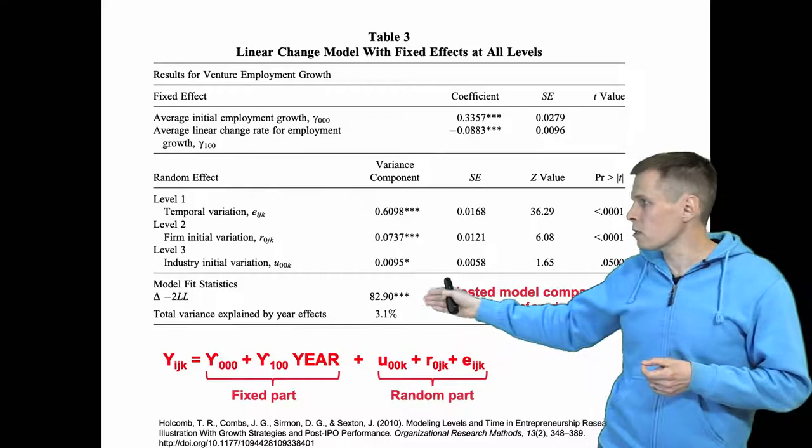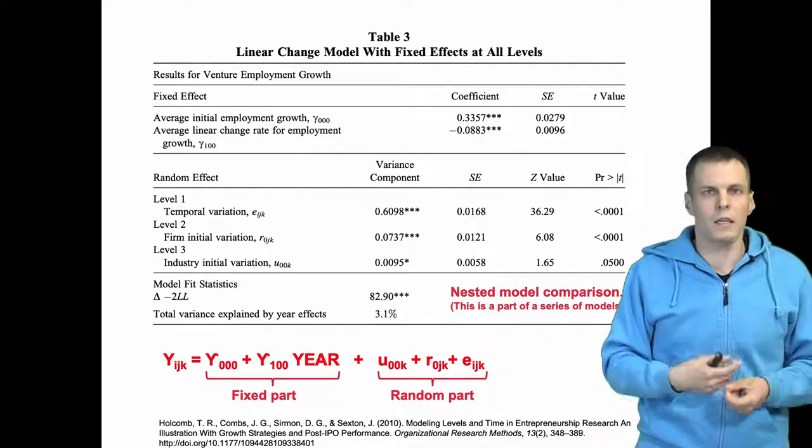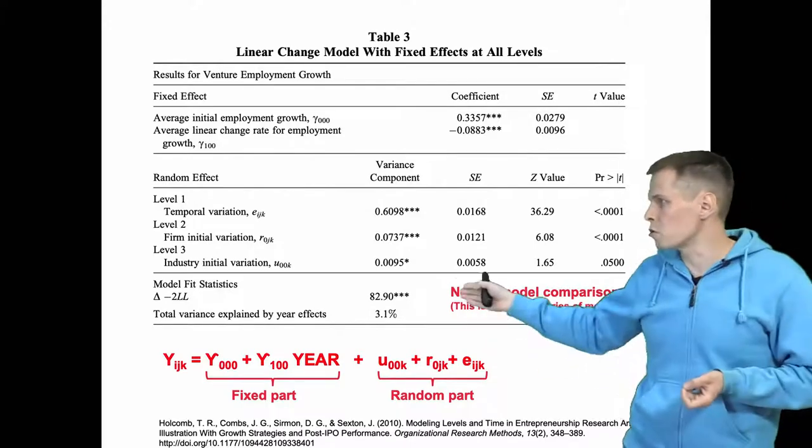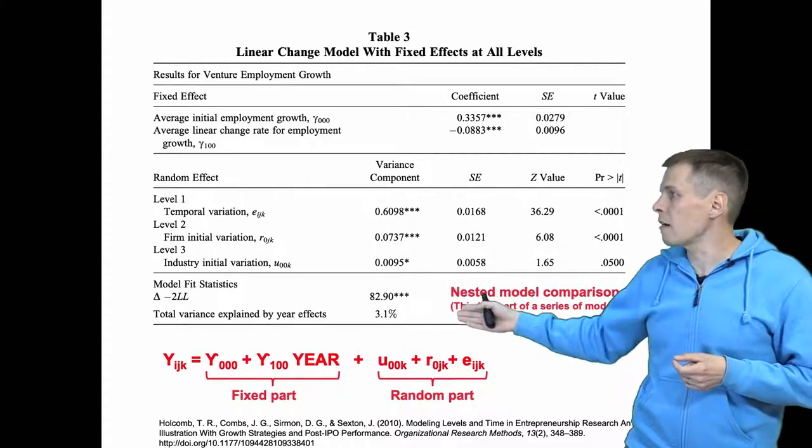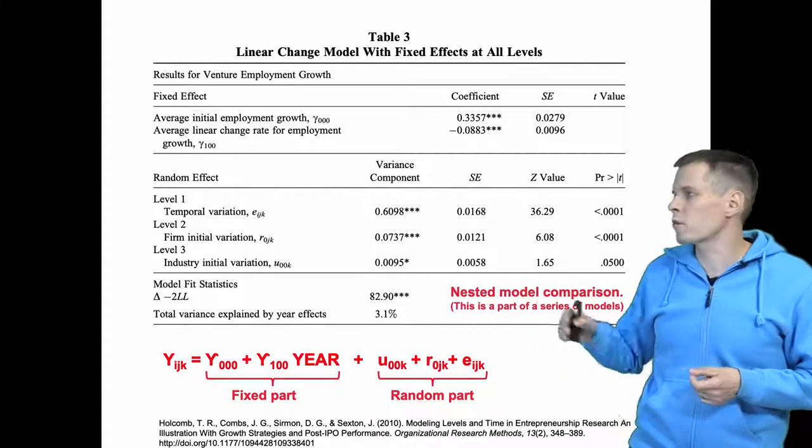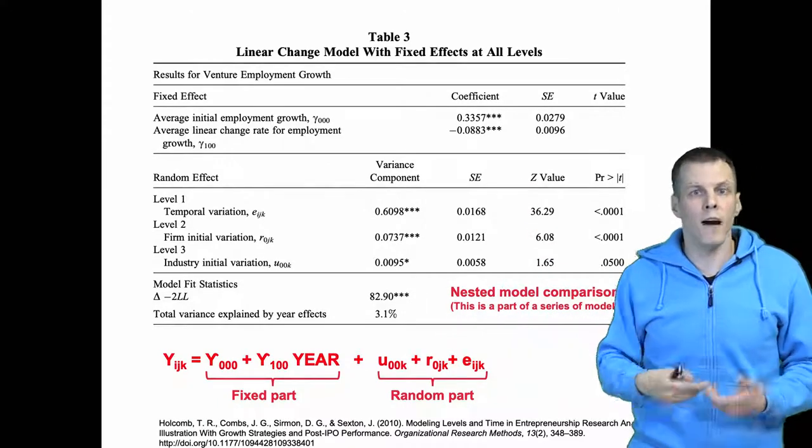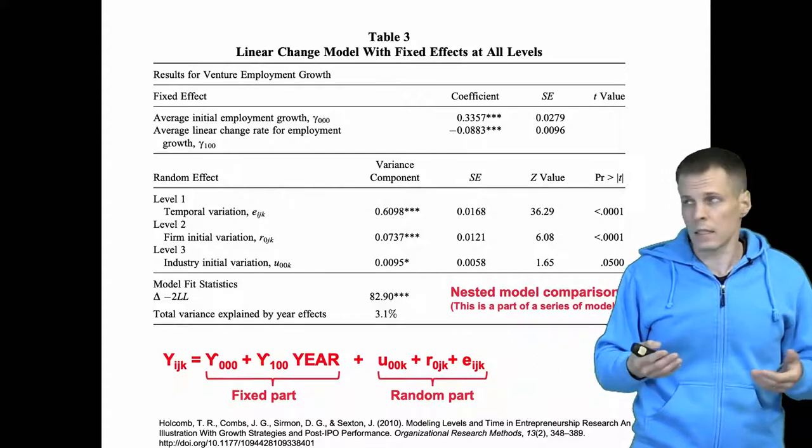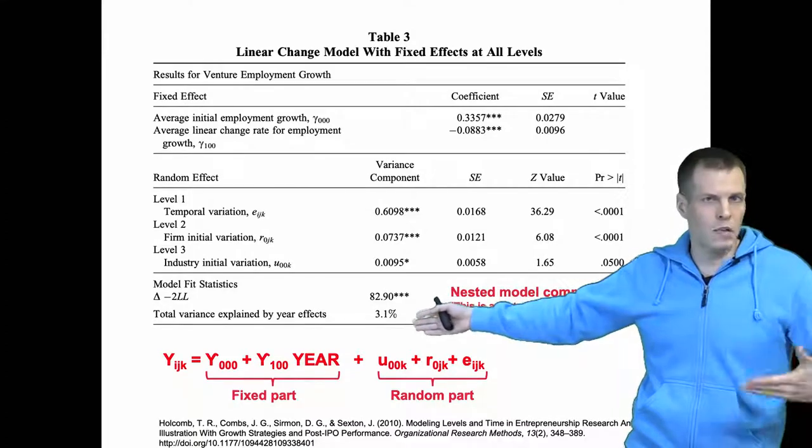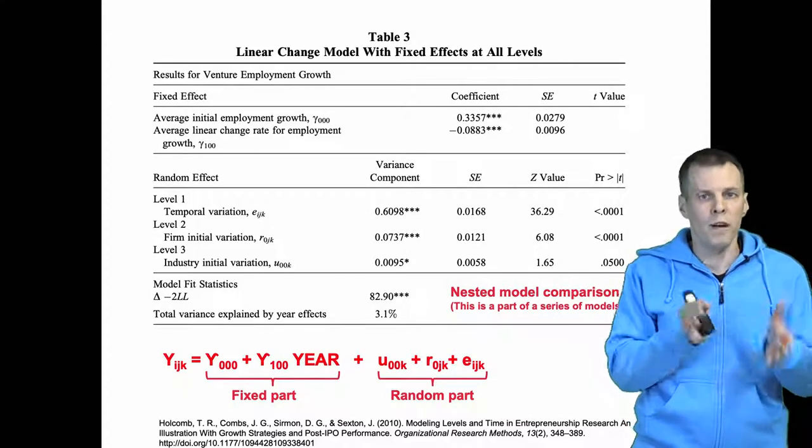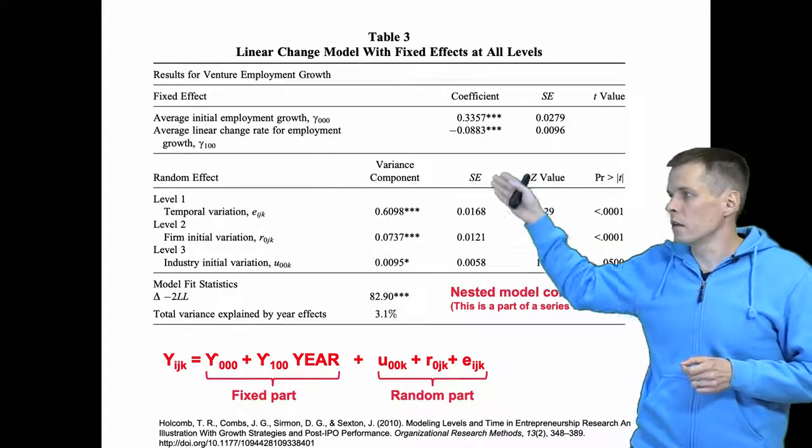Then we also have the likelihood statistic, which is pretty similar to the F statistic in the sense that you can do model comparisons using the likelihood statistic, but it really can't be interpreted directly. And sometimes, if we have a variance components model, we are really interested in what level the data varies. We have all kinds of explained variation statistics. This is basically the same as R square. So how much of the variation of the data the fixed part explains and how much the random part explains.